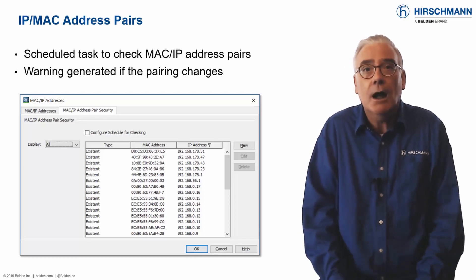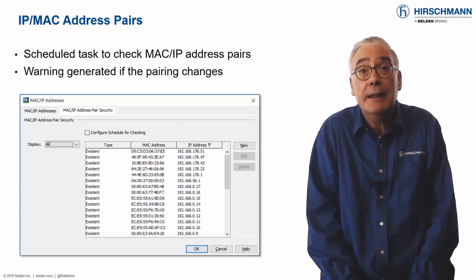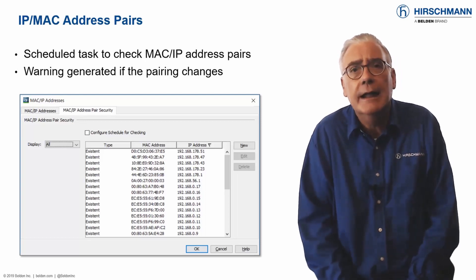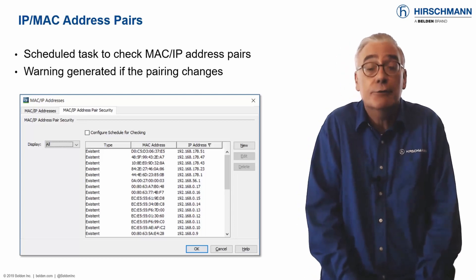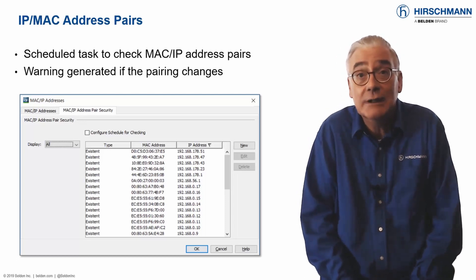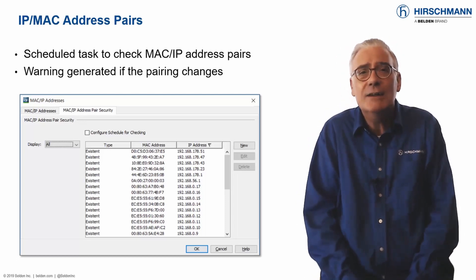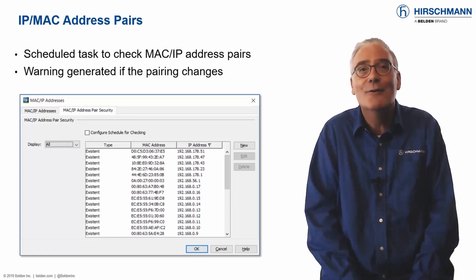Of course, there are legitimate reasons why MAC-IP address pairs could change — for example, if data is being transmitted through a router. So you can fine-tune the function to avoid false alarms.